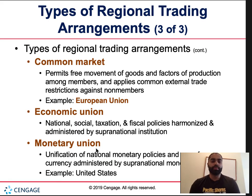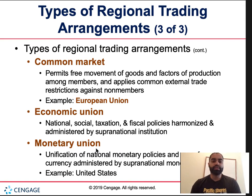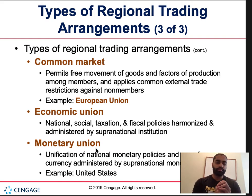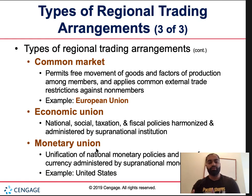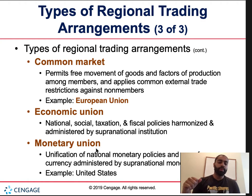A common market permits free movement of goods and factors of production among members, and applies common external trade restrictions against non-members. Comparing a common market to a customs union: the European Union is, to an extent, a customs union, but the key difference is that some EU countries don't have the same blanket policy for non-members. If asked on a quiz what the European Union is, it's much more accurately described as a common market. In the EU, you're allowed to move from country to country and work in any member country.